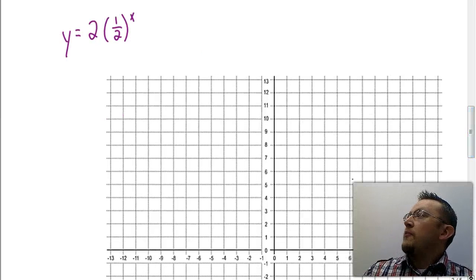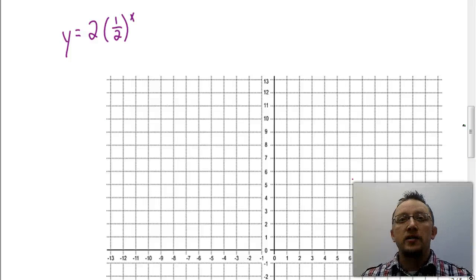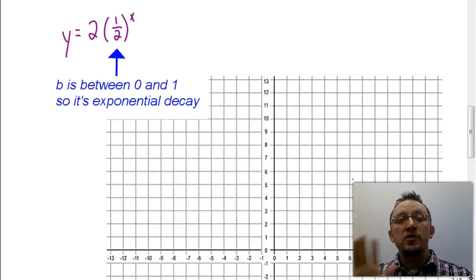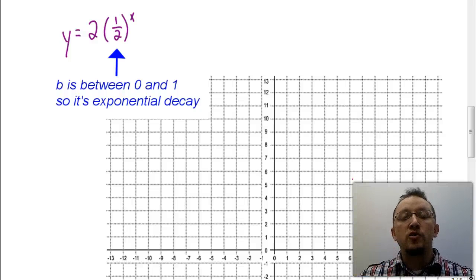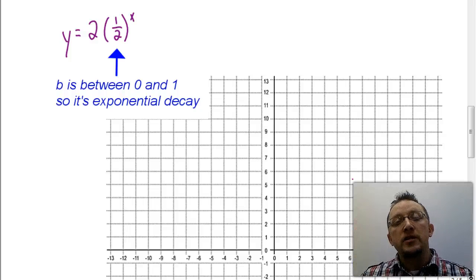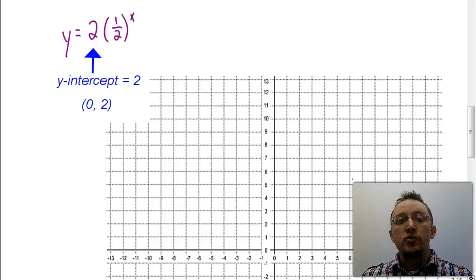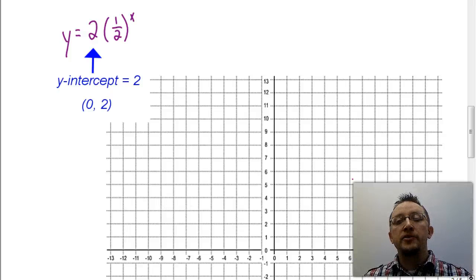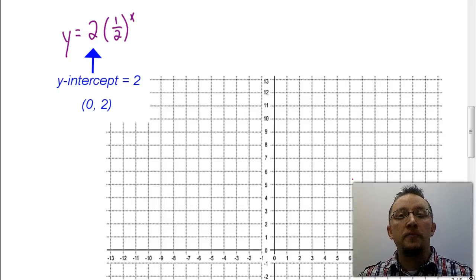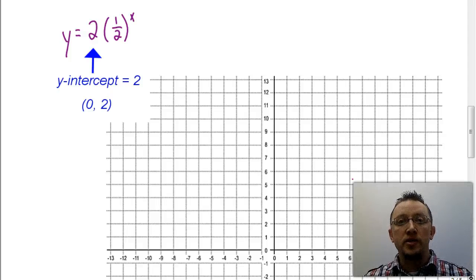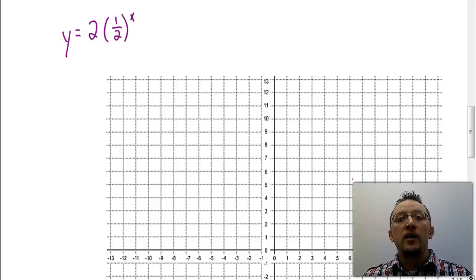Let's start by graphing y equals two times one-half to the x power. My value for b is one-half, which is between zero and one, so this graph represents exponential decay — it's going to decrease as we follow the x-axis. Also, the value for a is two, meaning my y-intercept is going to be at x equals zero, y equals two. Let's graph that and look at the shape of the graph.